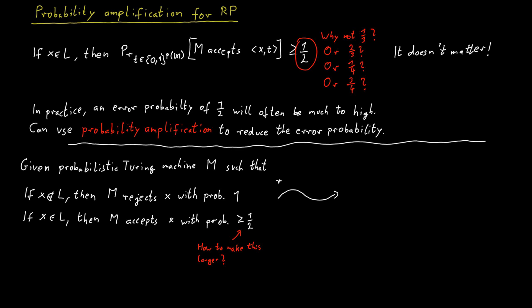So say you run the probabilistic Turing machine twice. If a word is not in the language, what is the probability that that Turing machine will reject the word both times? Well, the probability for that is equal to one, because we know that if a word is not in the language, the probabilistic Turing machine will reject for sure, so it will do this both times.